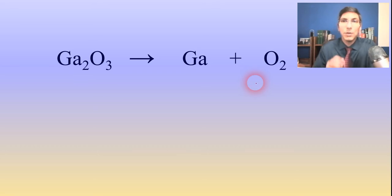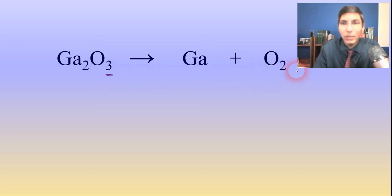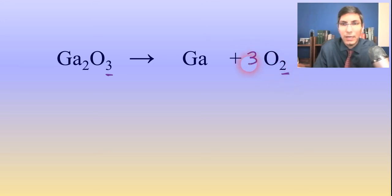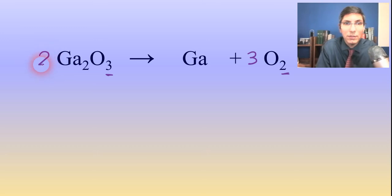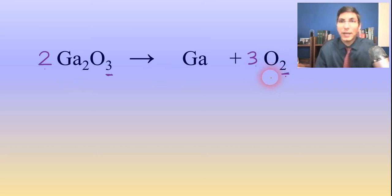That's what balancing equations is all about. We're going to do that by putting numbers — these coefficients — in front of each of these substances. So let's start with oxygen. We have three oxygens on the left and only two oxygens on the right, so I'm going to multiply the 2 by 3 to make it 6, and multiply the 3 by 2 by putting a 2 in front of its compound. So 3 times 2 is 6, and 2 times 3 is 6. Now I have the same number of oxygens on both sides of the arrow.